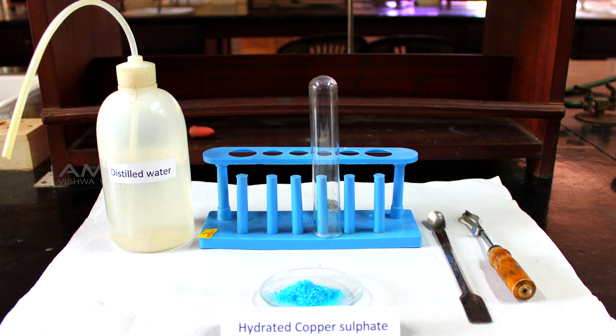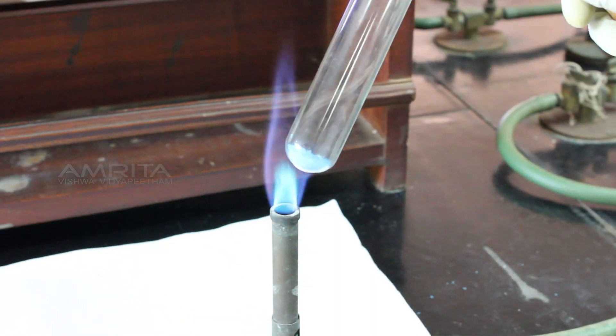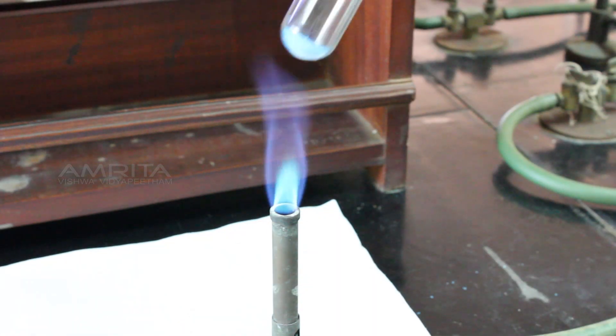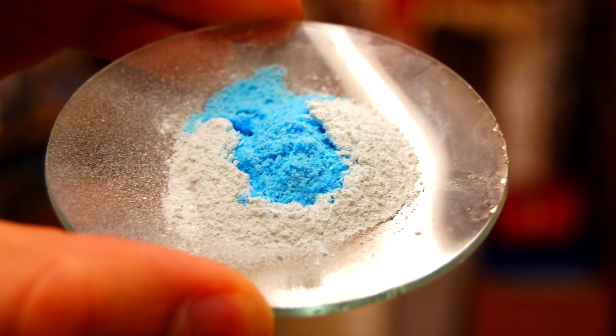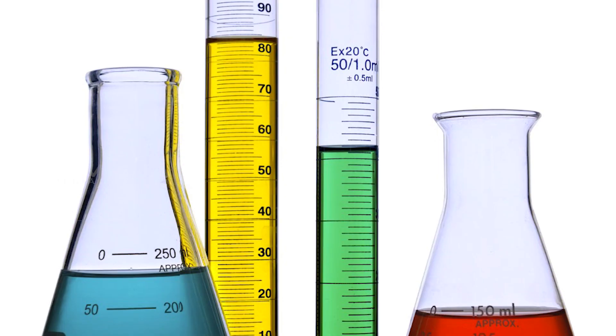The aim of this experiment is to carry out the reaction heating of copper sulphate and classify it as a physical or a chemical change.